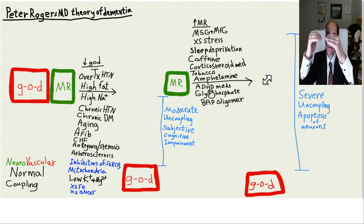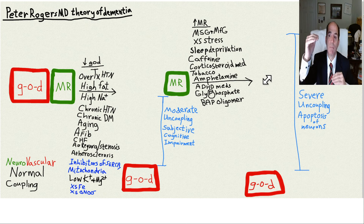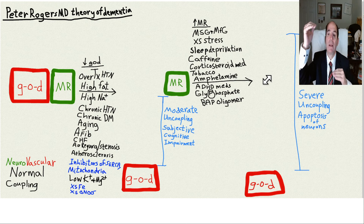Your neuron needs enough oxygen and glucose to meet its metabolic demands. If you drop oxygen and glucose delivery due to overtreated hypertension, AFib, congestive heart failure, aortic regurgitation, or aortic stenosis, you widen the gap — creating problems for that neuron. You make it worse by adding stimulants like caffeine, sleep deprivation, psychological stress, amphetamines, or cocaine.